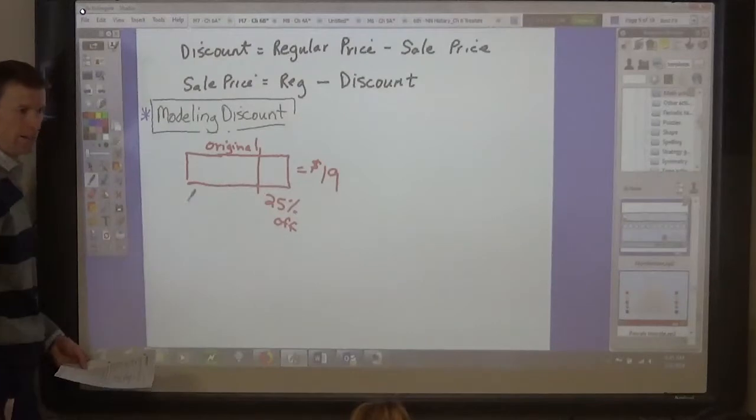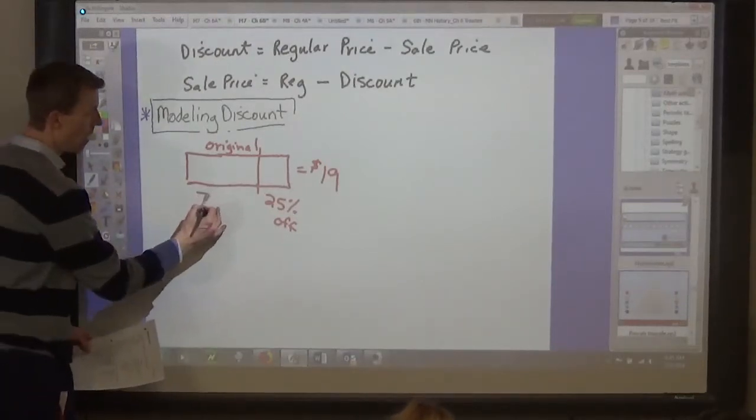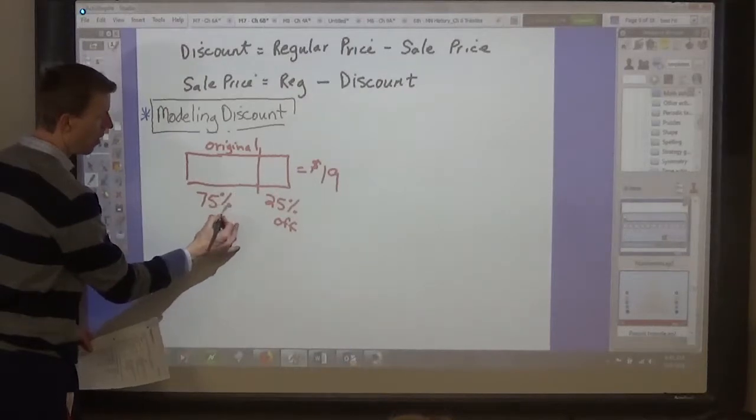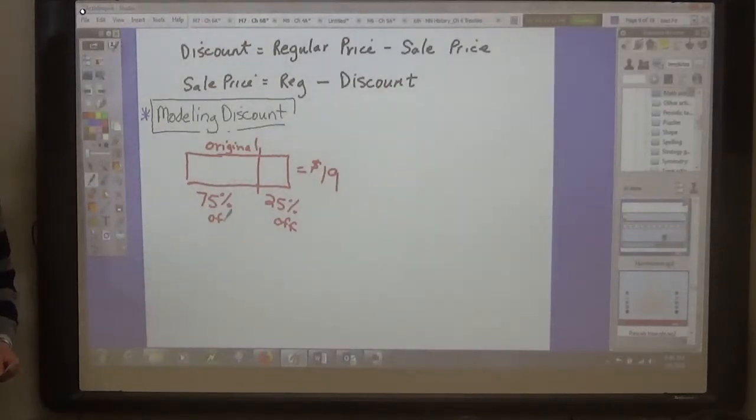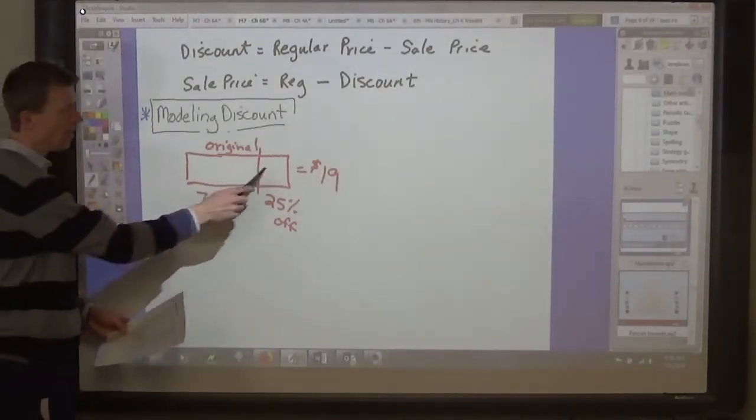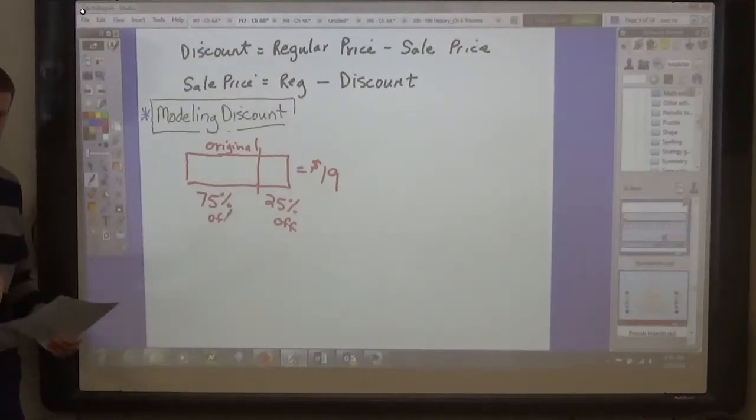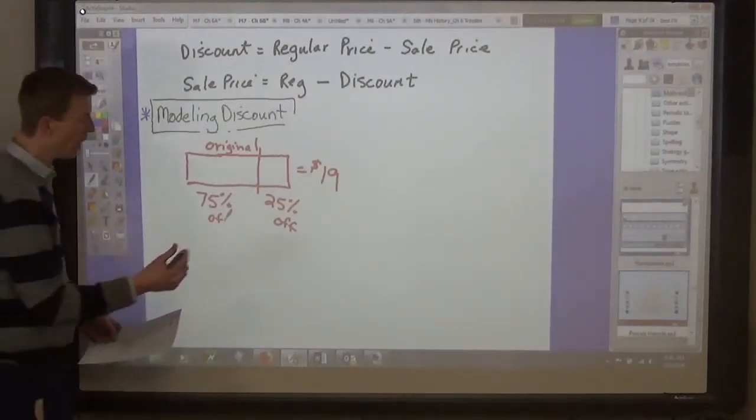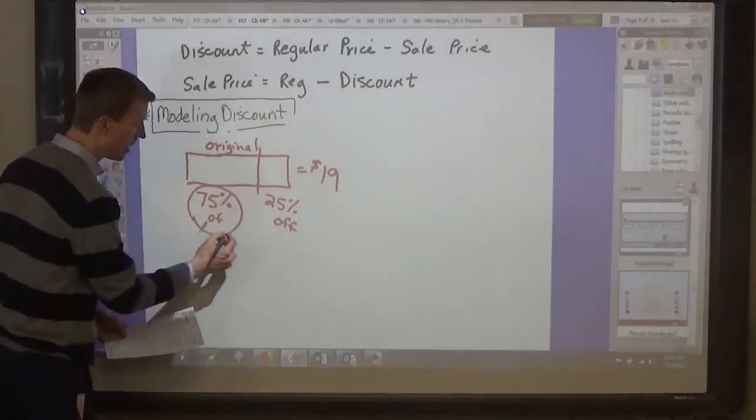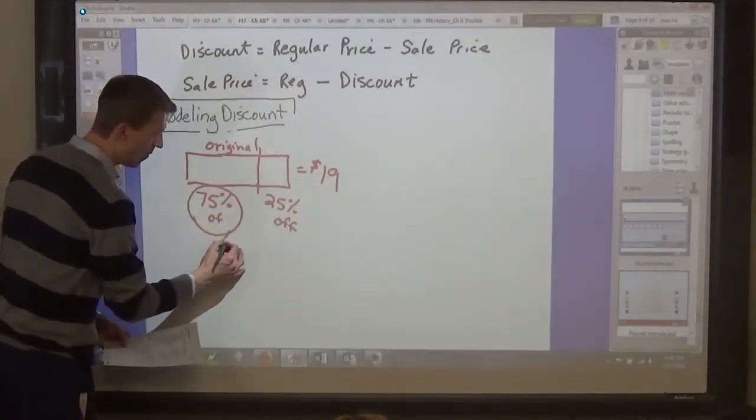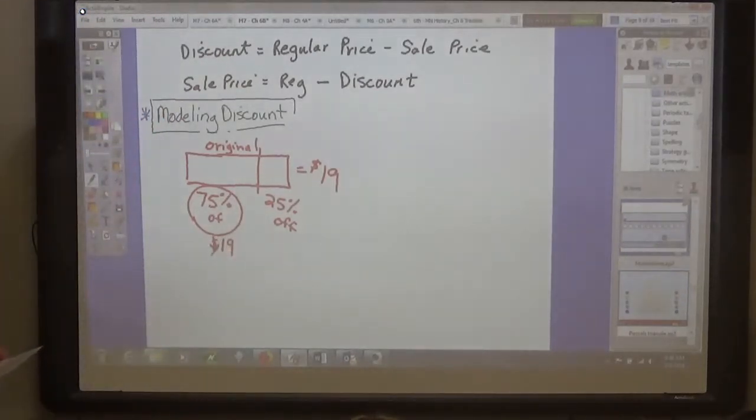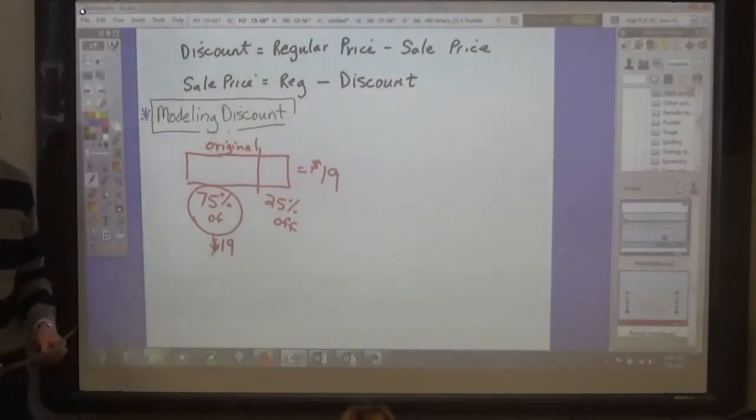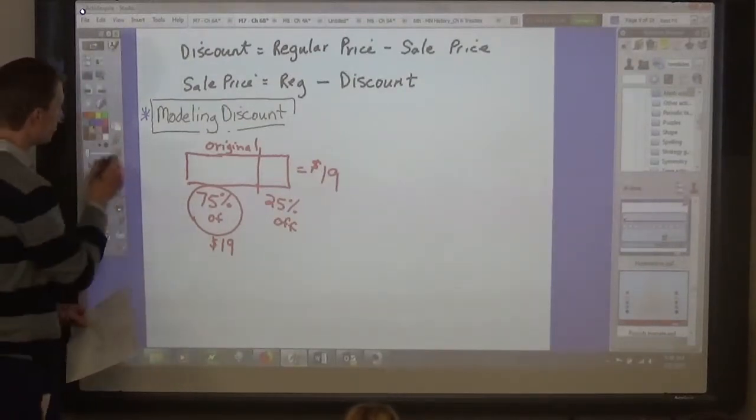75% of the original price. So again, there's two ways to find this answer. We can either find the amount off and then subtract it, or we can just find 75% of the original price, 75% of 19, which is what we've been doing with finding percents of numbers. Haven't we? You can even put this in a proportion if you wanted to.